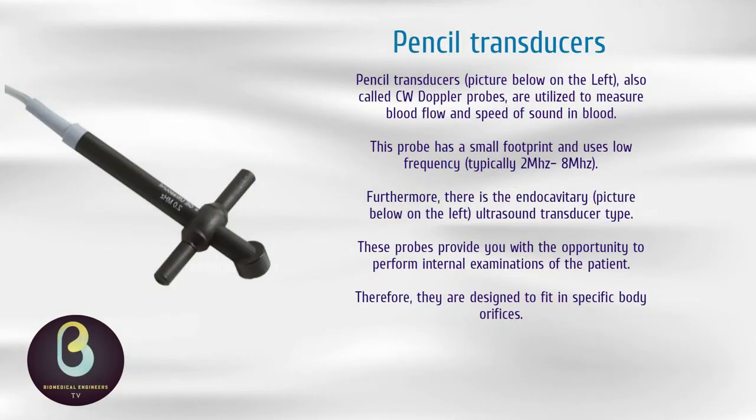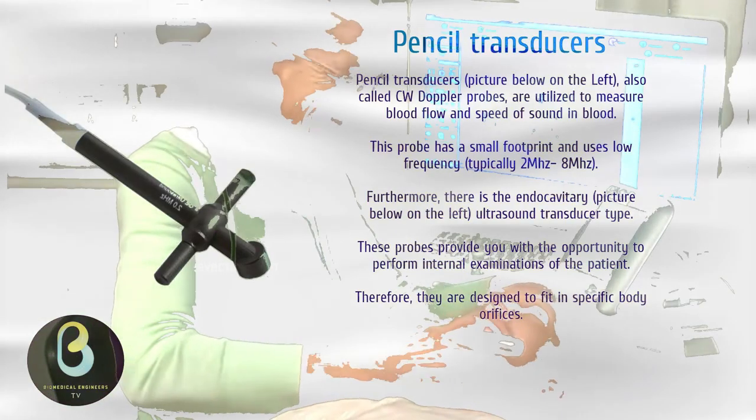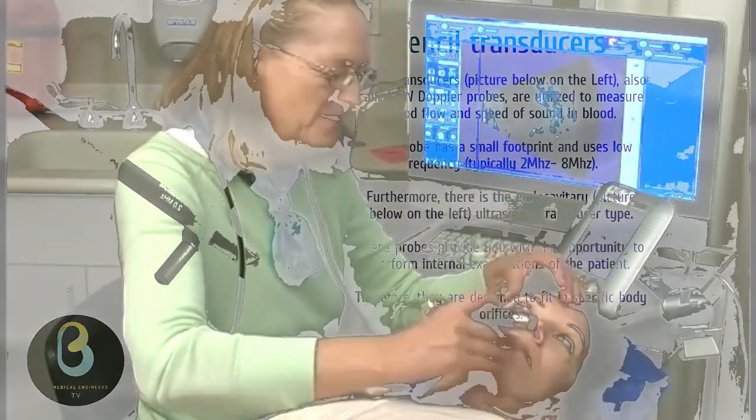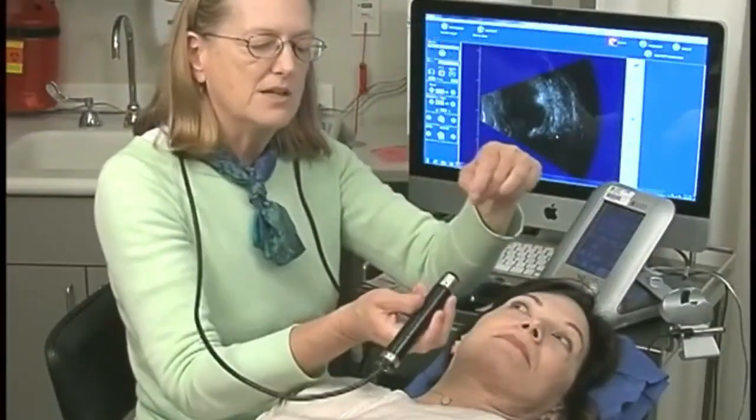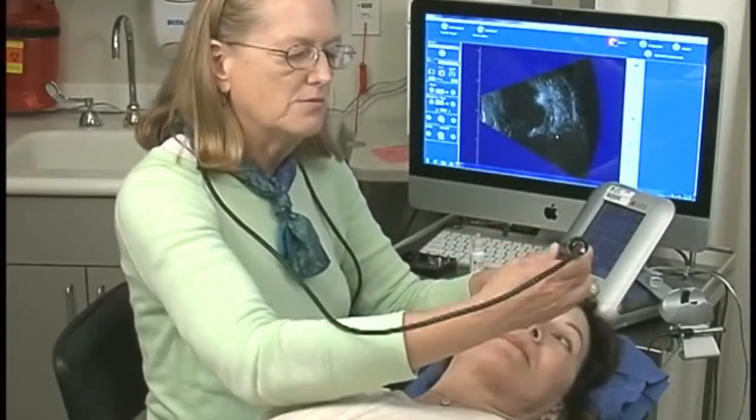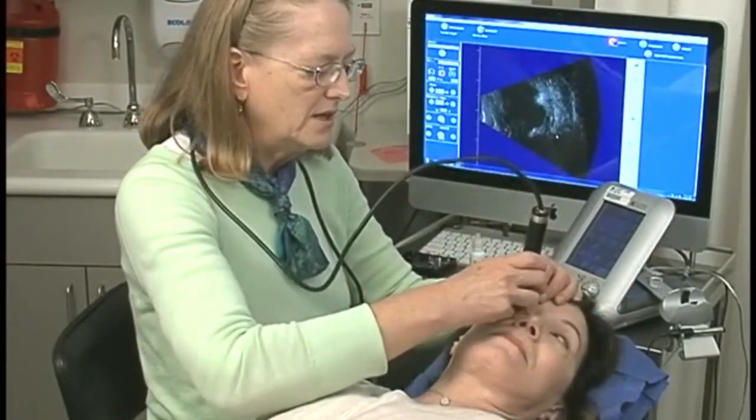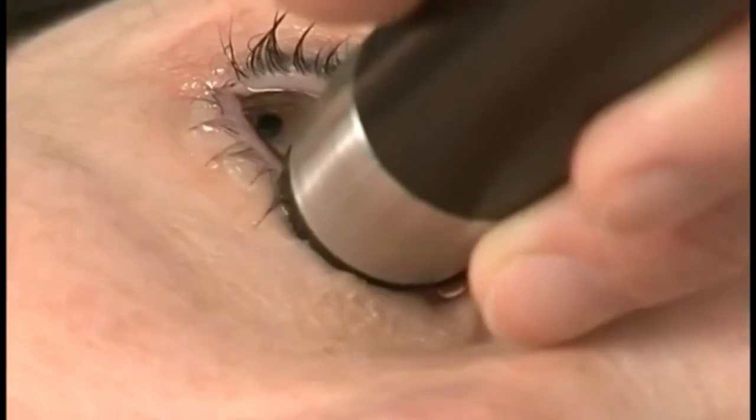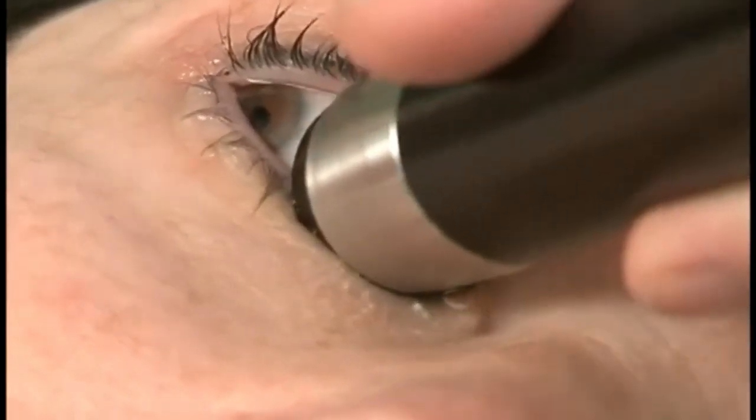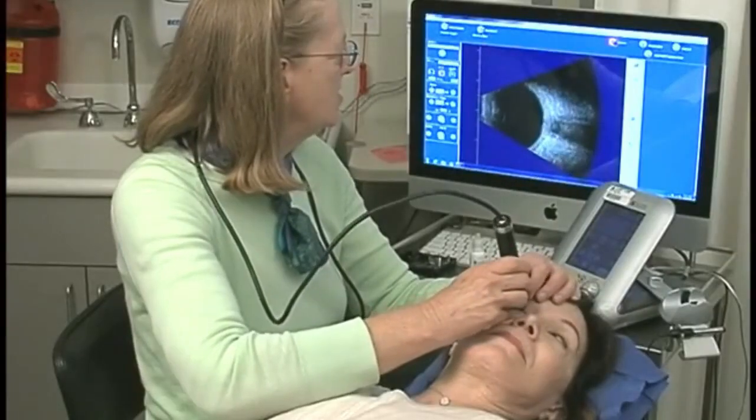These probes provide you with the opportunity to perform internal examinations of the patient. Therefore, they are designed to fit in specific body orifices. The endo-cavity transducers include endo-vaginal, endo-rectal and endo-cavity transducers. Typically, they have a small footprint and the frequency varies in the range of 3.5MHz to 11.5MHz.